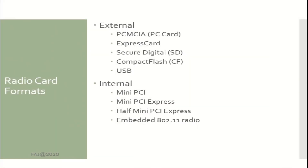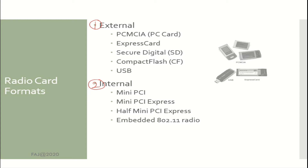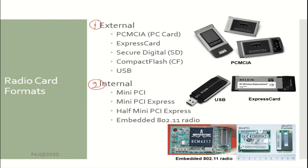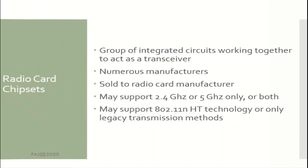Radio Card Formats. There are two types of radio card formats: External and Internal. Examples of External formats are PCMCIA, PC Card, CompactFlash (CF). Examples of Internal formats are MiniPCI and M.2 PCIe 802.11 Radio.